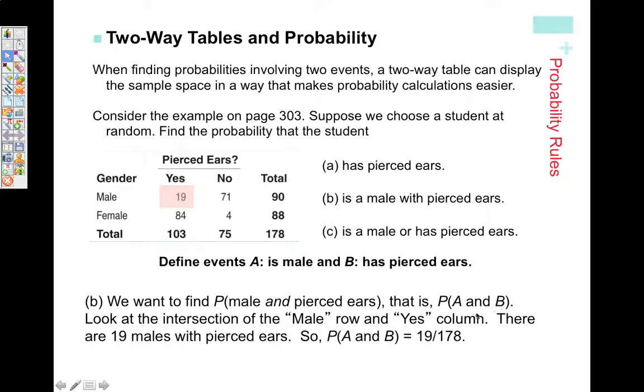Male and pierced ears, that is probability of A and B. We're looking for the students that are in the male row and in the pierced ear column, so we're looking at 19 out of 178. There are 19 people that fit this criteria.